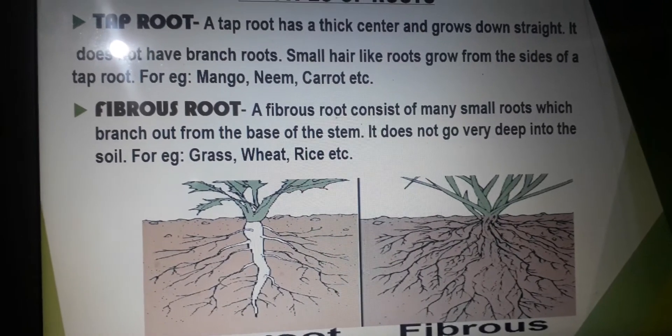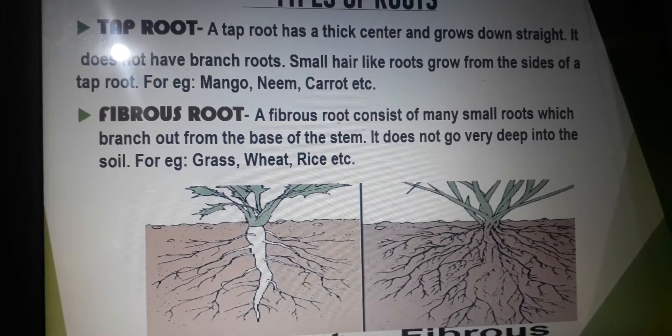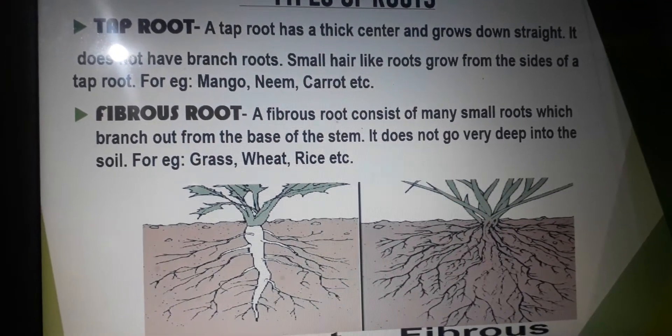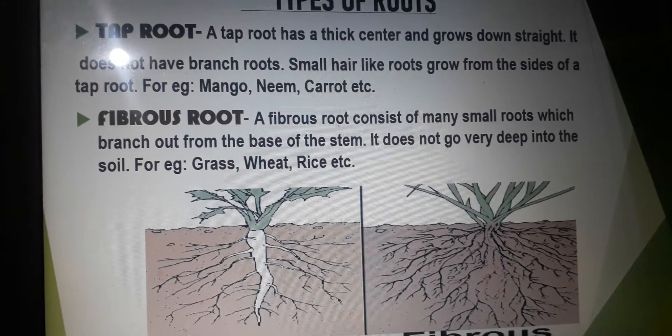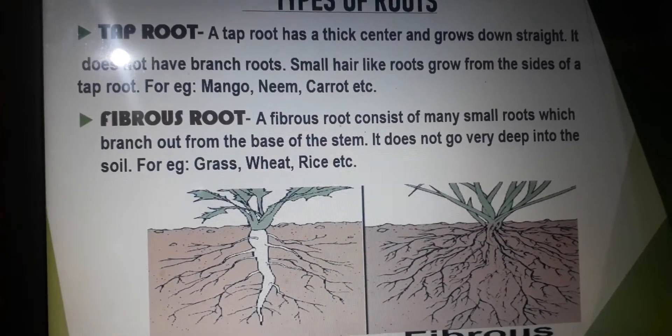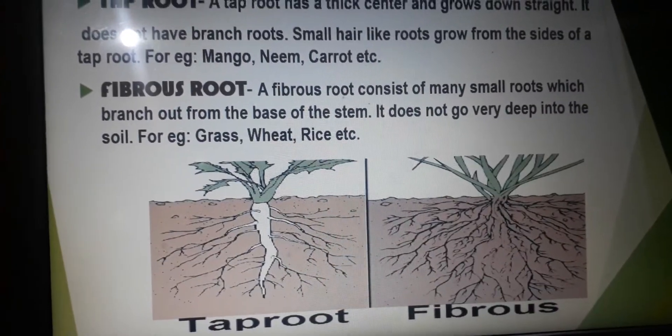Fibrous roots do not go very deep into the soil but branch out sideways in all directions, which prevents soil erosion. Grass, wheat, rice, herbs have fibrous roots.